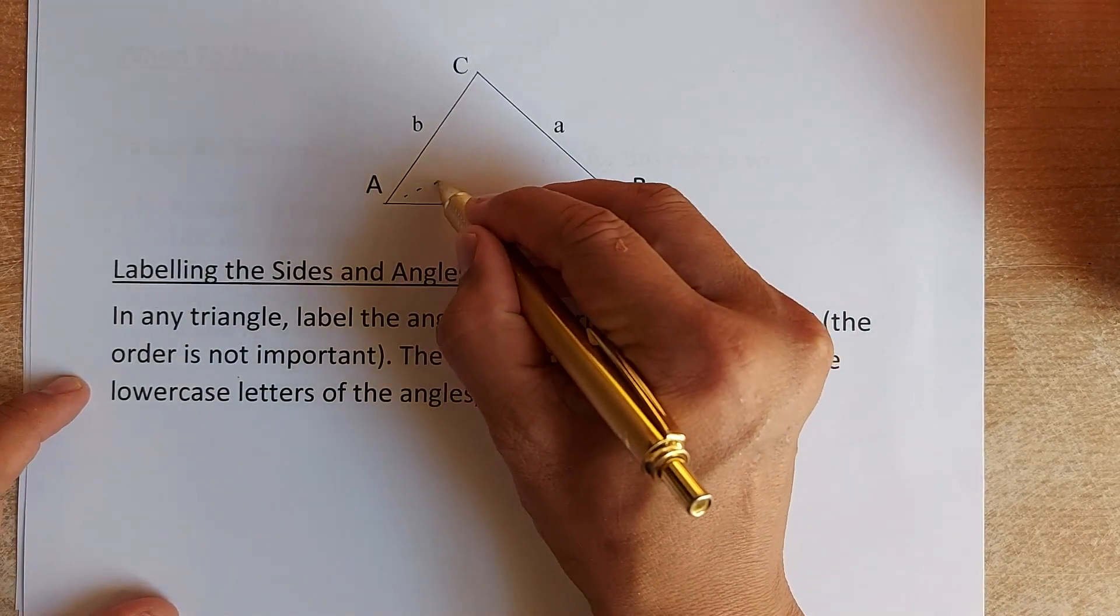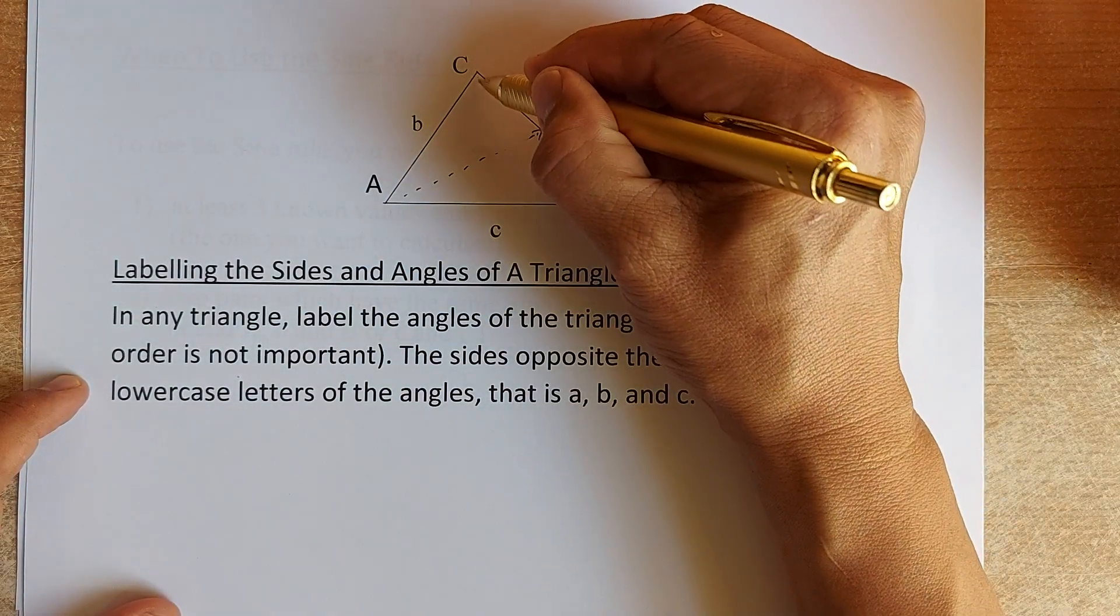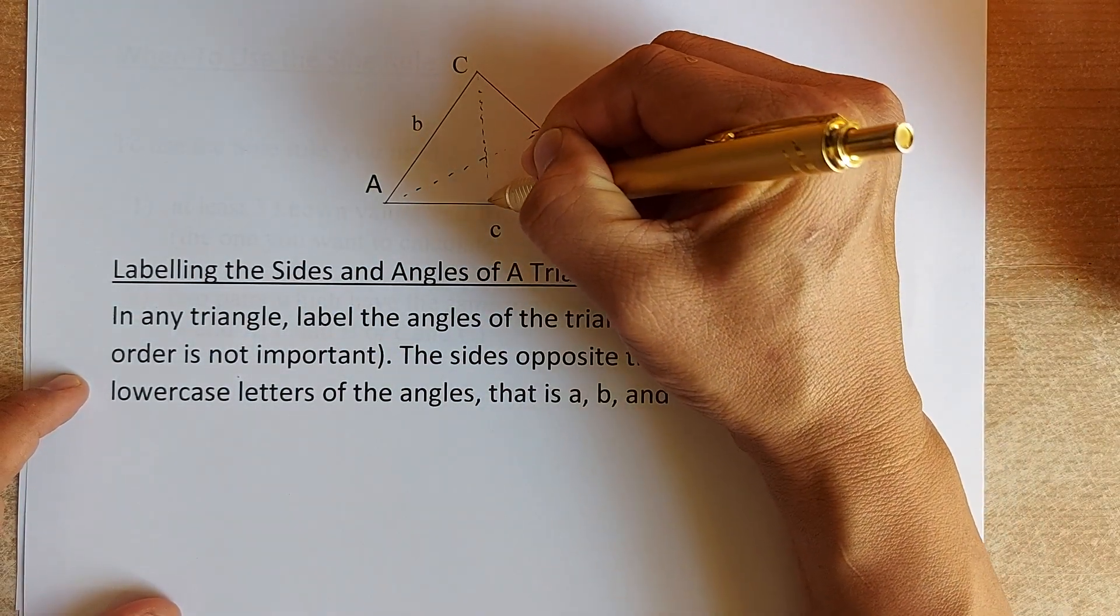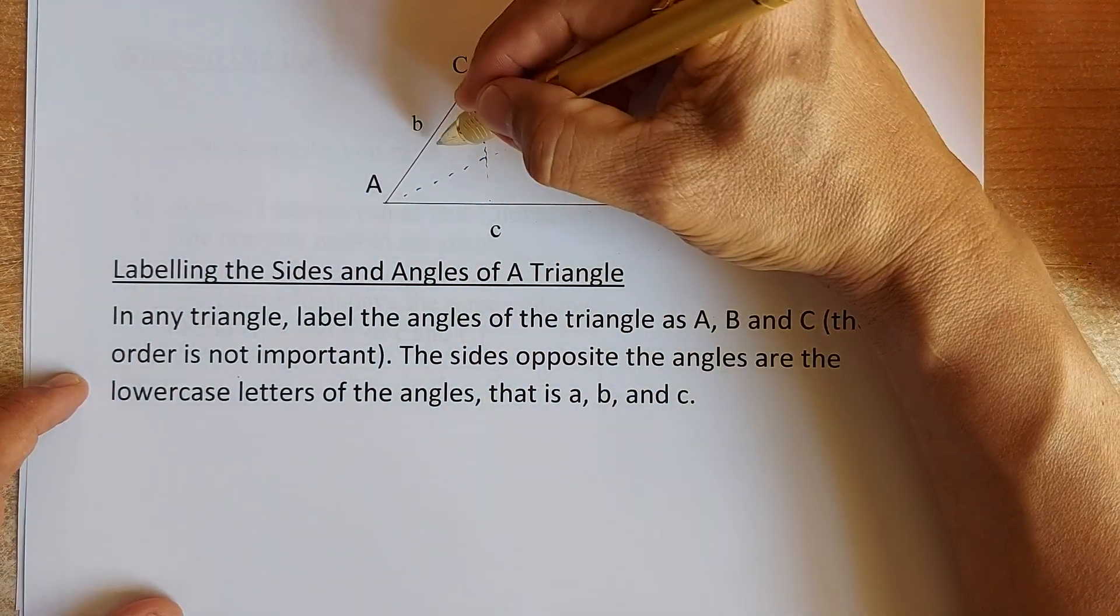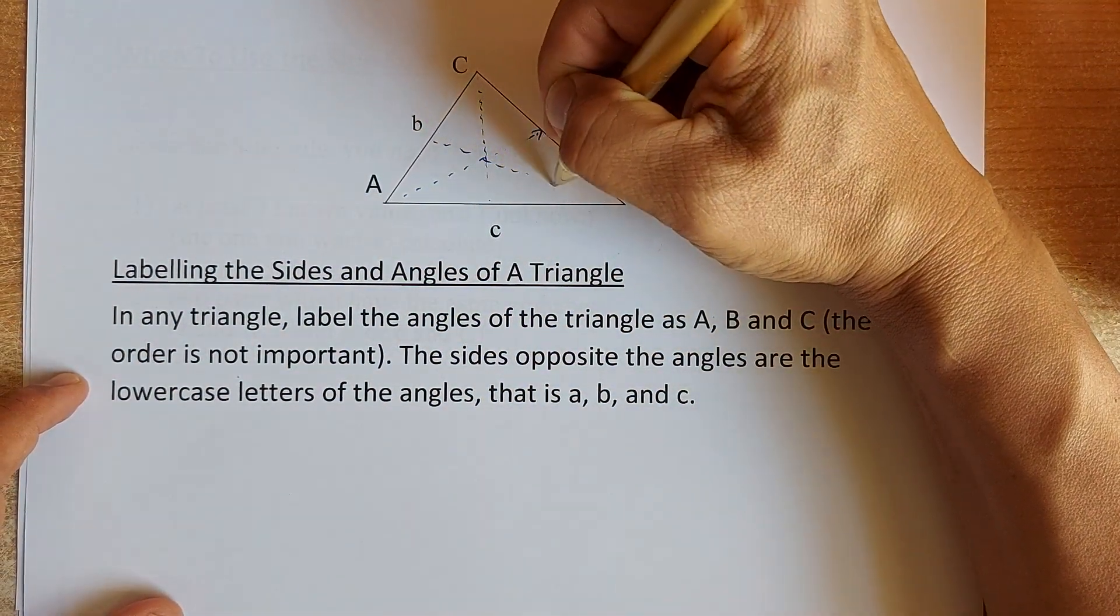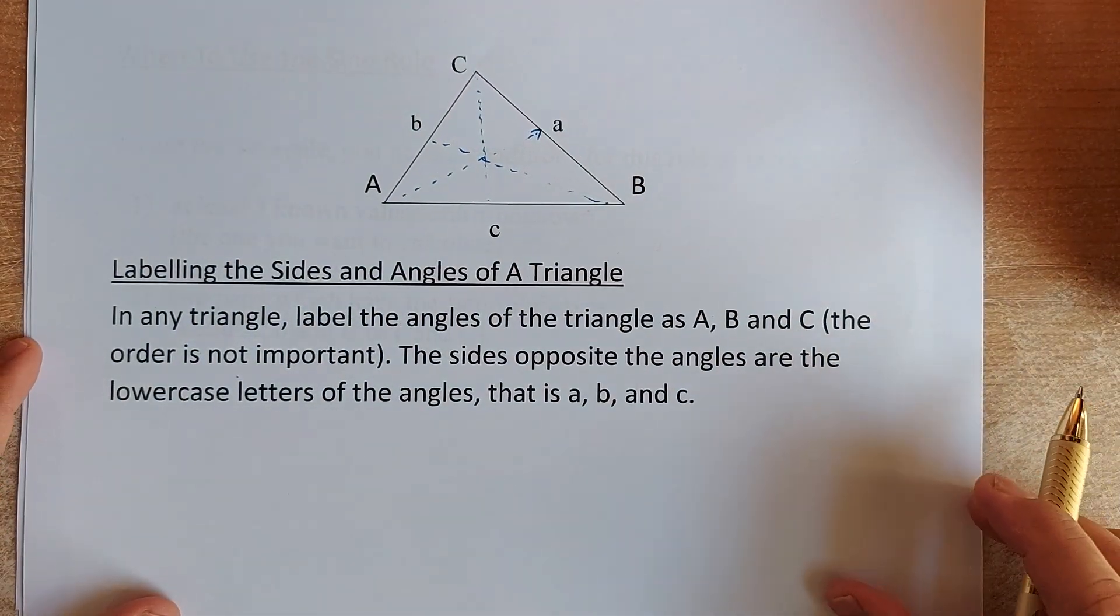For example, A, the capital A, the one opposite it is the lowercase a. And the angle C, the one opposite the angle C is the lowercase c. And the size opposite the angle B is the little b or the lower case B. That is how you label.